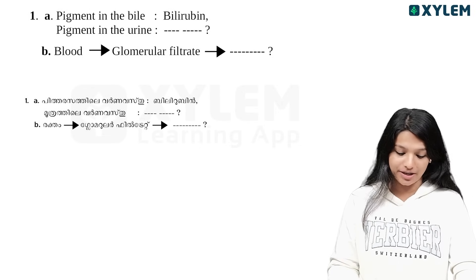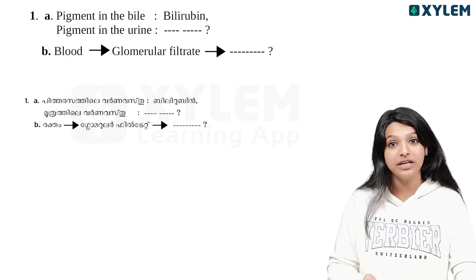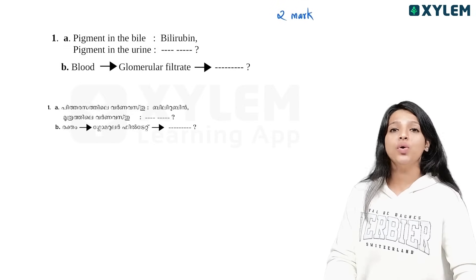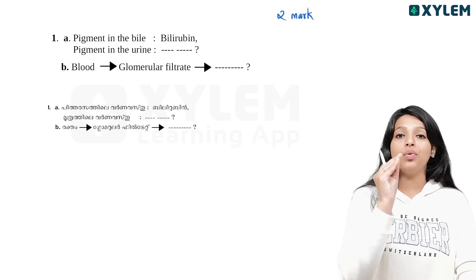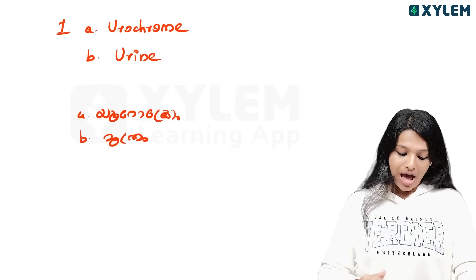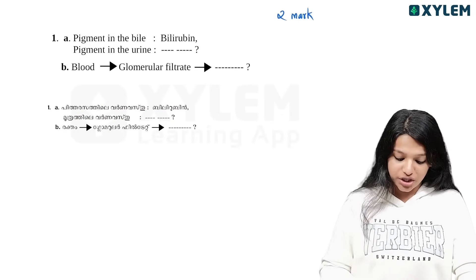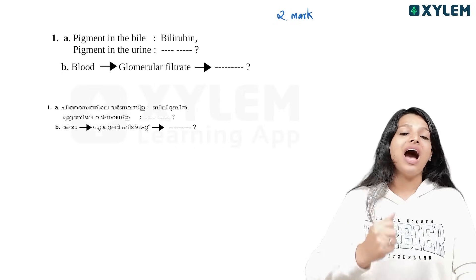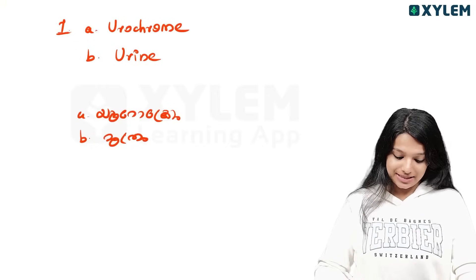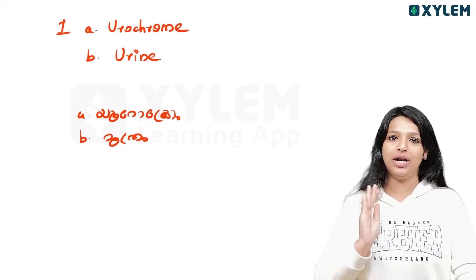That's why I said bilirubin. Blood converts to glomerular filtrate. As you are doing the urine section, urine is the answer.